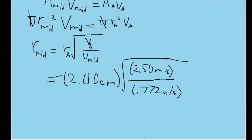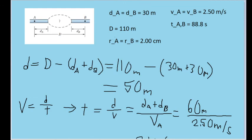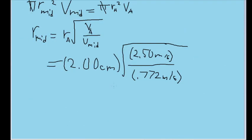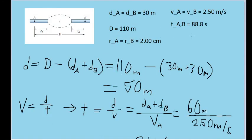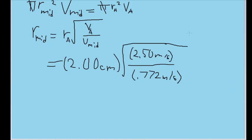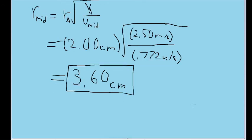For r_A, I'm plugging in 2 centimeters, the radius of the pipe at points A and B. Then multiplying by the square root of V_A — 2.5 meters per second — divided by V_mid — 0.772 meters per second. Plugging all this into our calculator, we get an average radius in the middle section of the pipe of 3.60 centimeters. And that is how we can find the average radius of the pipe segment underneath the hill.